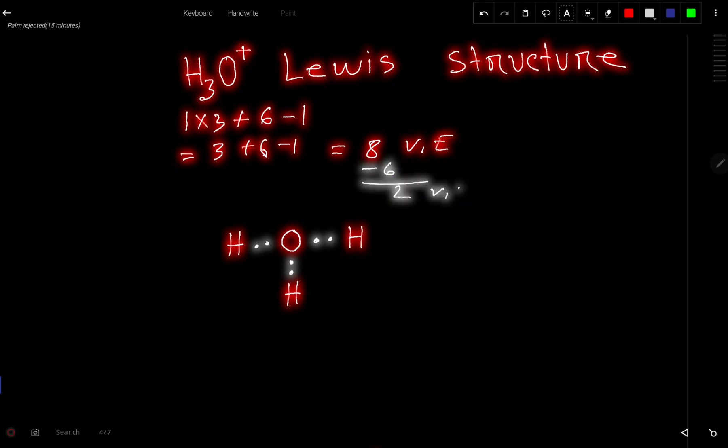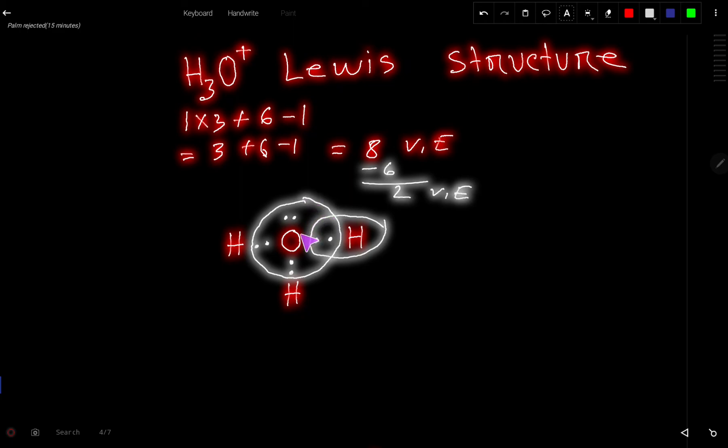So we have two valence electrons left. Now these two valence electrons will come over oxygen because hydrogen can share maximum two valence electrons. So here two valence electrons come over oxygen. Now look, this hydrogen has fulfilled its duet, this hydrogen also has fulfilled its duet, and this hydrogen also has fulfilled its duet, and this oxygen has eight valence electrons in its outer shell now. So this is the Lewis structure of H3O plus.